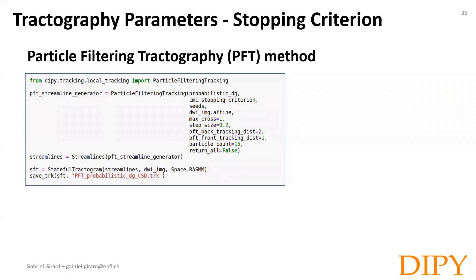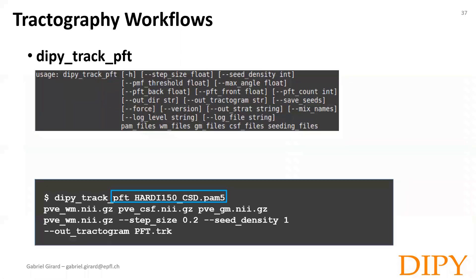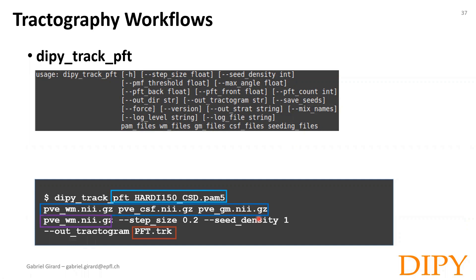To do this in DIPY, we need to replace the local tracking function with the particle filtering tracking function. It takes as input the direction getter — here for instance the probabilistic direction getter — a CMC or ACT stopping criteria that contains the partial volume estimate information, and the seeds. We can then generate the streamlines as we did previously. In a very similar fashion, we can perform the particle filtering tractography algorithm in the terminal using the DIPY workflows. The main difference is that we input the three partial volume estimates instead of the tracking mask.